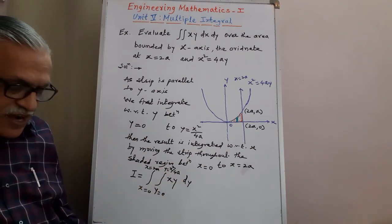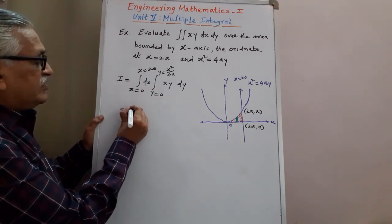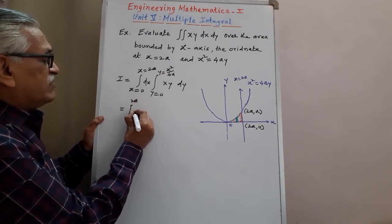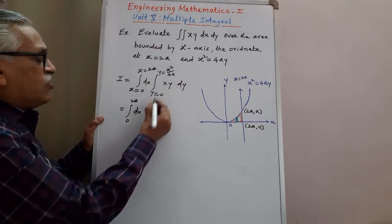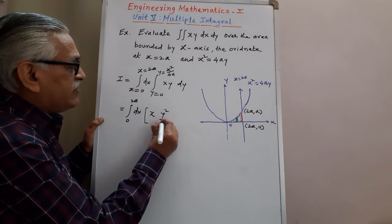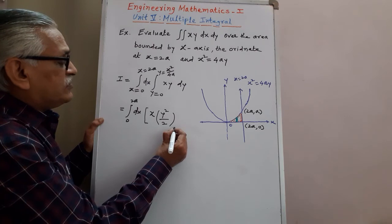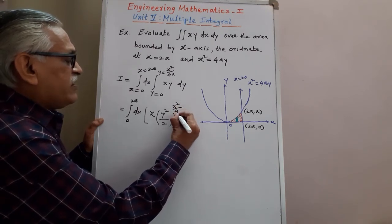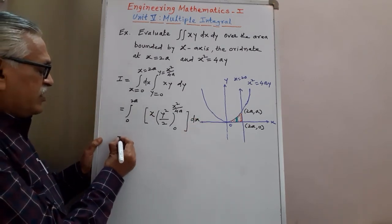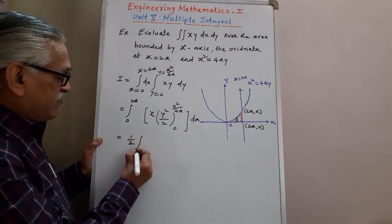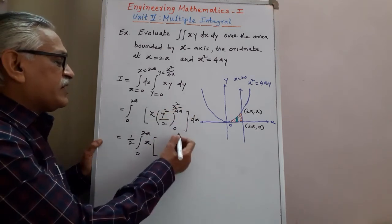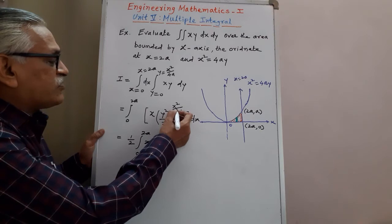We perform the integration as discussed previously. First integrating with respect to y, keeping x as constant and taking it outside the integral sign. Integration of y with respect to y is y squared by 2, evaluated between limits 0 and x squared by 4a. Then we integrate with respect to x, taking the constant 1/2 outside.